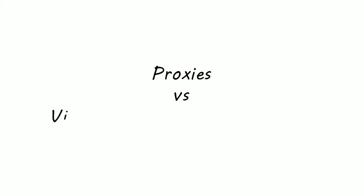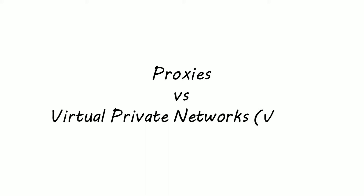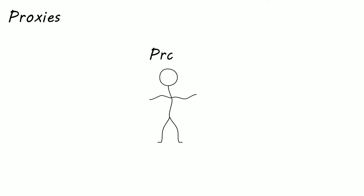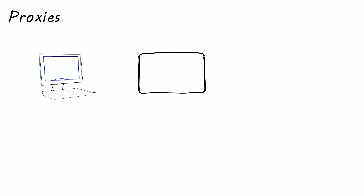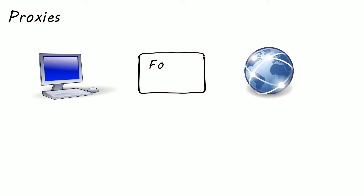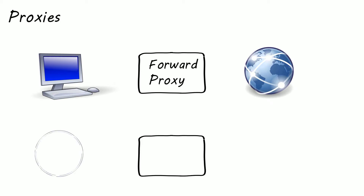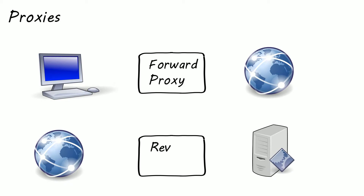Hello and welcome to another system design video. In this video we'll be looking at proxies and comparing them with virtual private networks or VPNs. A proxy is basically a middleman that passes requests on from one place to another and back. A proxy which sits between the client and the web is called a forward proxy, and the proxy server sitting between the web and your web application servers is called a reverse proxy.